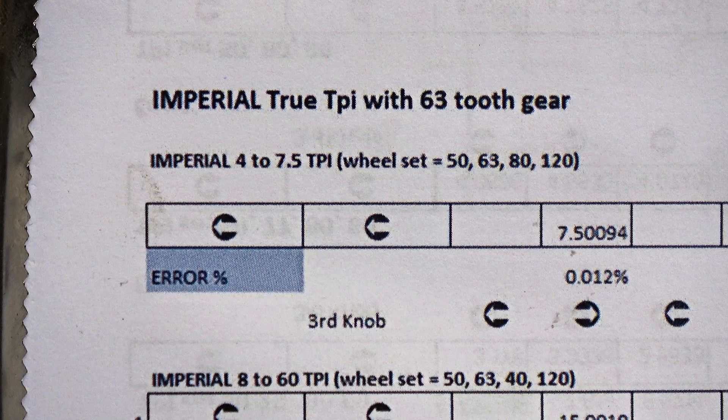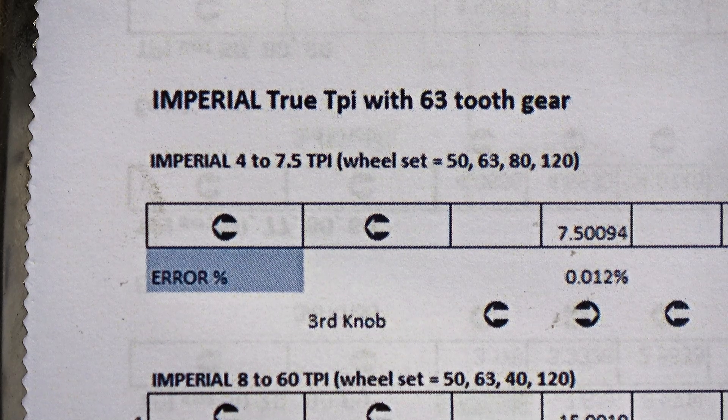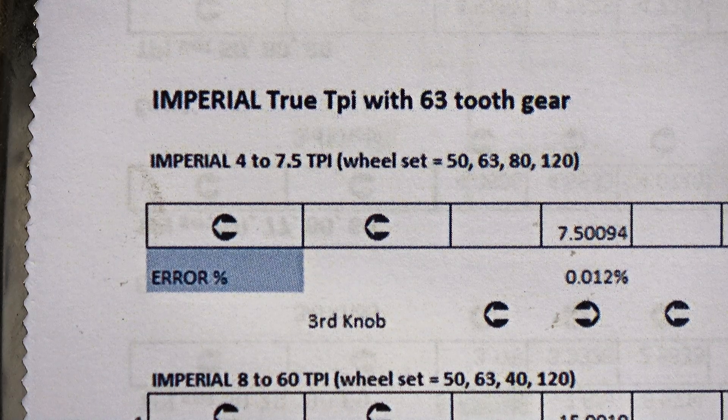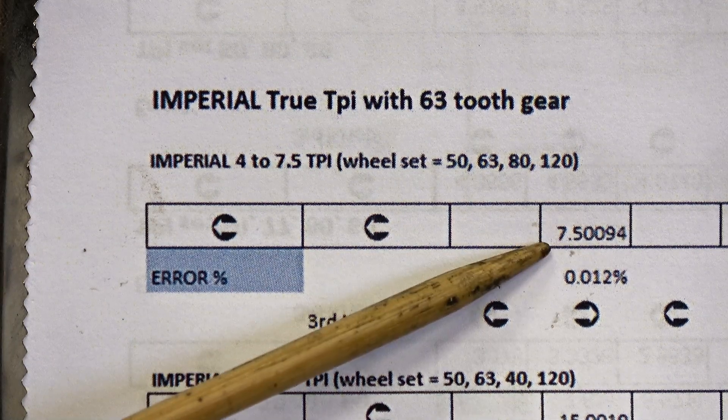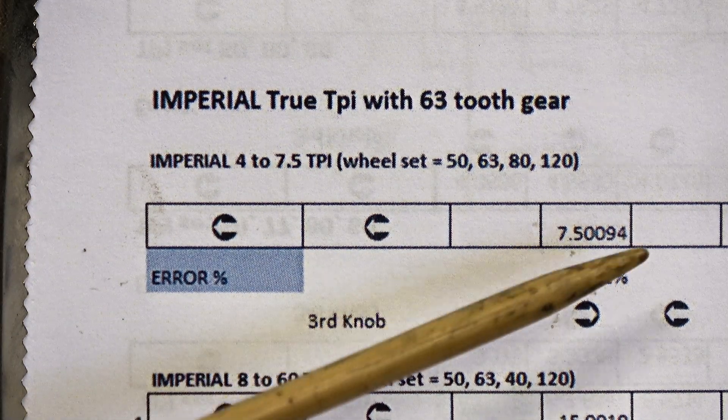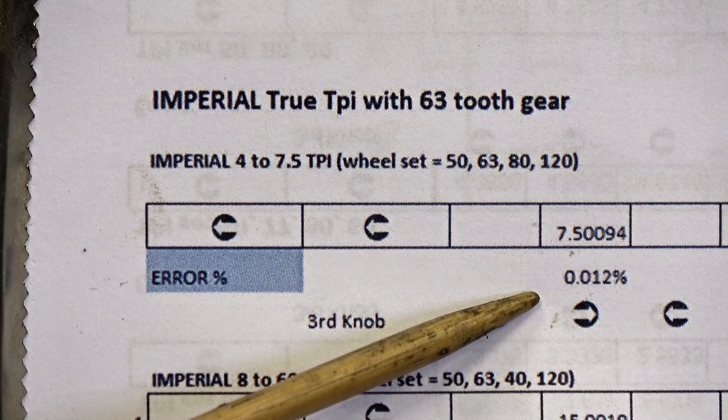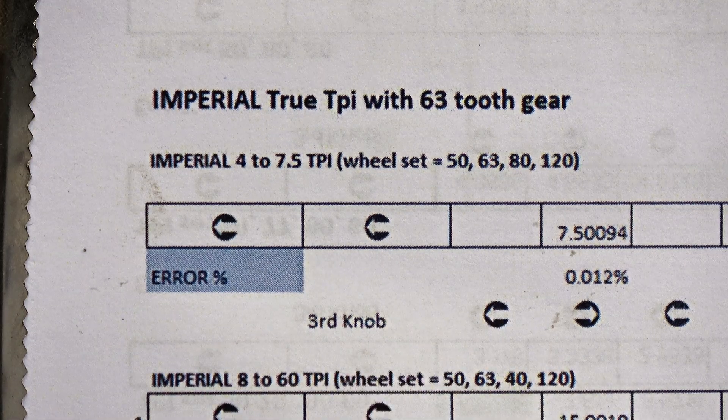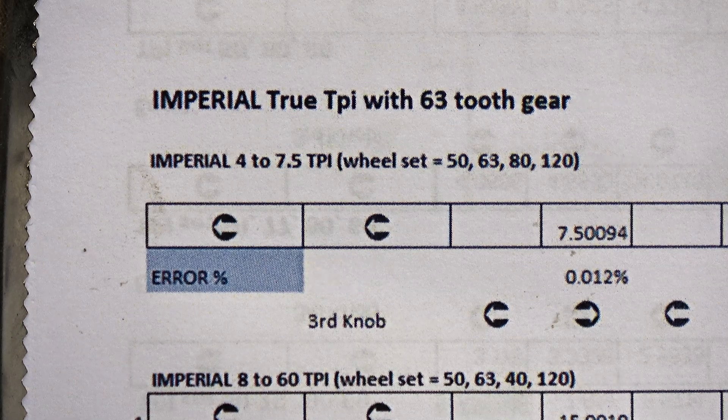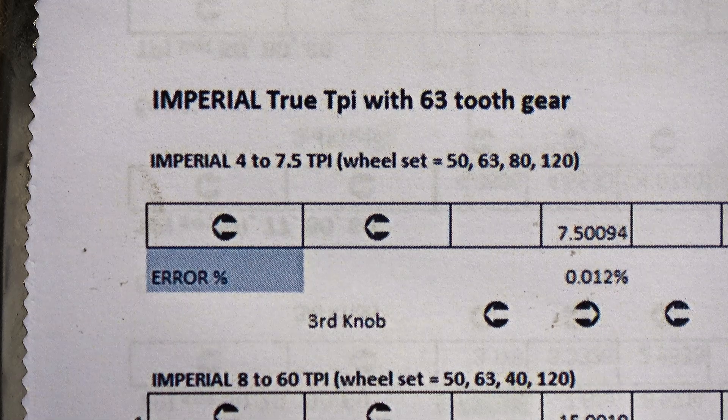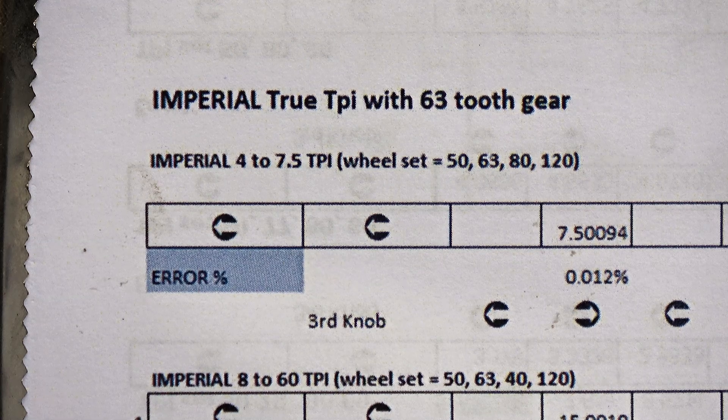I'd just like to address a point from a comment by a viewer saying that the 63-tooth gear doesn't give perfect imperial pitch on this lathe, and they're absolutely right. I added an error row to my spreadsheet and you can see in this example here, 7.5 TPI has an error of 0.012 percent. But that level of error is only 1 in 833. So in other words, if you were cutting an 8.3 inch nut, you'd have an error of 1 thou over its length, or you could say 2.5 hundredths of a millimeter over 200 millimeters. So I think it's close enough for what we want to do.